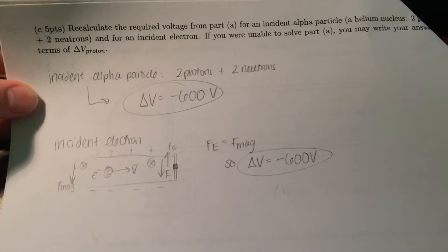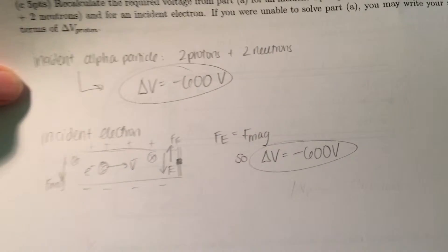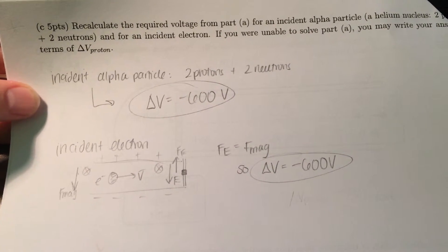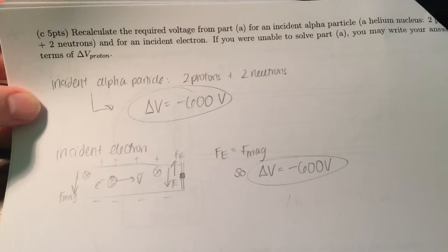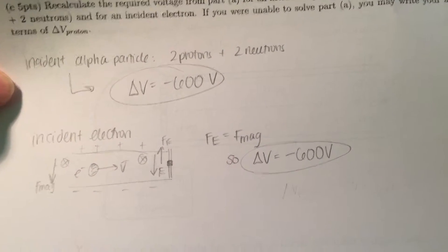So I figured that the voltage isn't going to change since it had nothing to do with charge, so both the alpha particle and the electron both equal 600 volts, which should be positive.